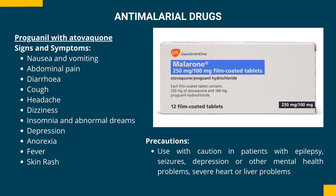Antimalarial drugs — proguanil with atovaquone. Signs and symptoms include nausea and vomiting, abdominal pain, diarrhea, cough, headache, dizziness, insomnia and abnormal dreams, depression, anorexia, fever, and skin rash. Use with caution in patients with epilepsy, seizures, depression, or other mental health problems.